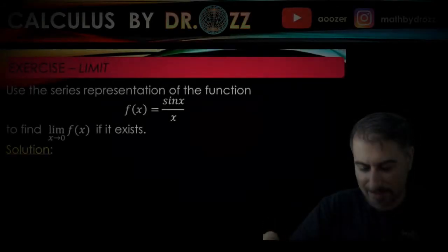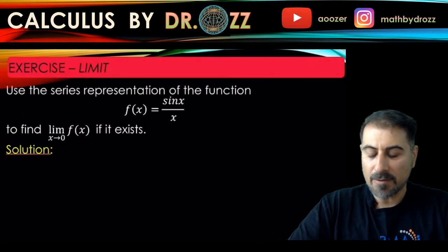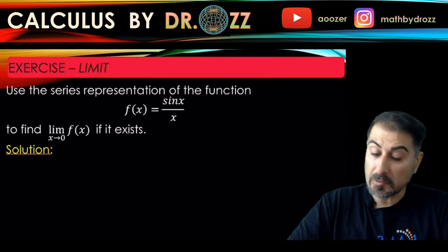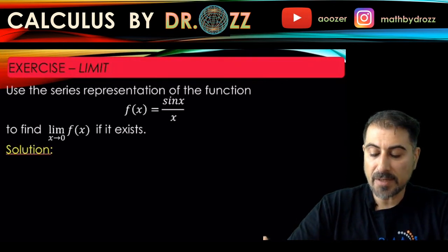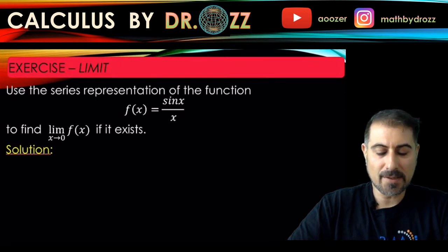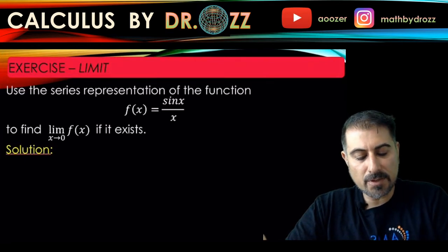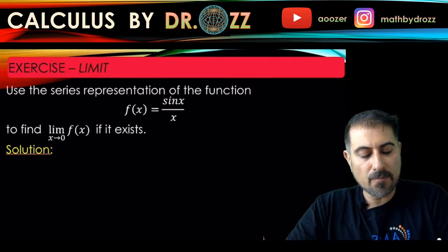We're going to use the power series or series representation of the function to find the limit of the function at 0. This was in fact one of the limit questions that we tackled in calculus one. It's sin(x)/x, which is almost like sin(0)/0 type, which is a 0/0 type indeterminate form.